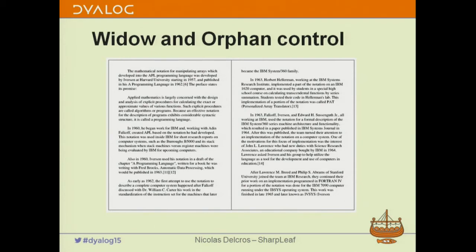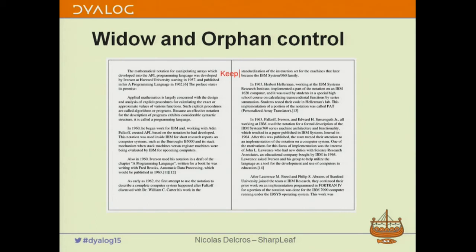Another thing about paragraphs is what is called widow and orphan control. Here we have flowing text and you notice that a paragraph across a frame switch leaves its last line on one side — generally some people regard that as not beautiful. The way we avoid this is by setting something called 'keep' to a number of lines. By setting keep to two, I say I don't want any less than two lines to be on its own on either side of a frame switch. Keep applies both to widow and orphan — both before and after a page break.